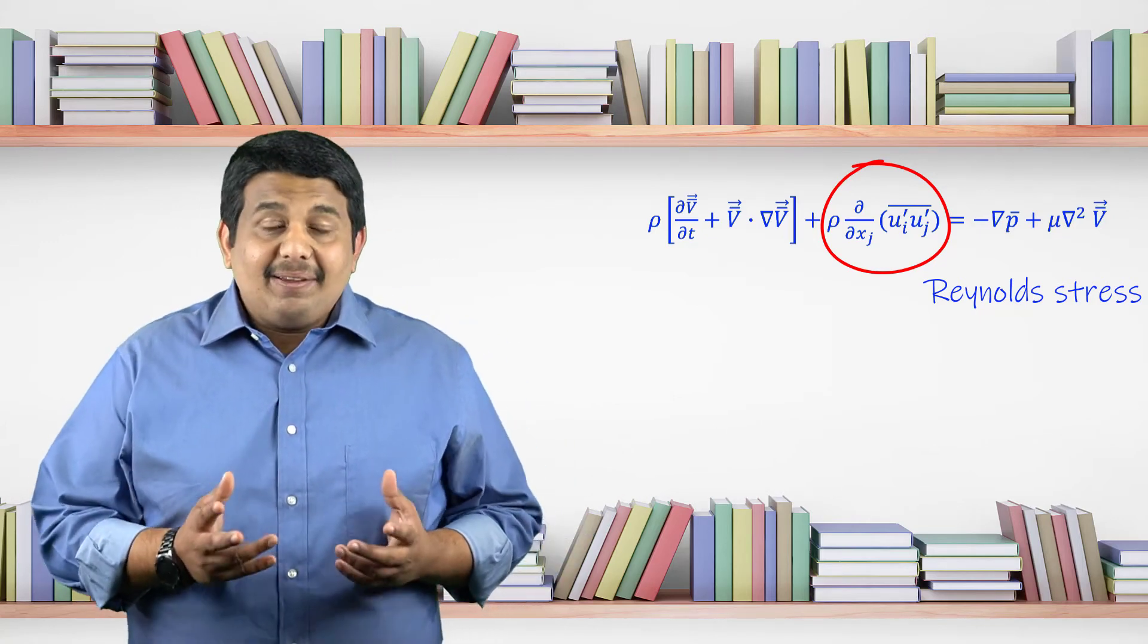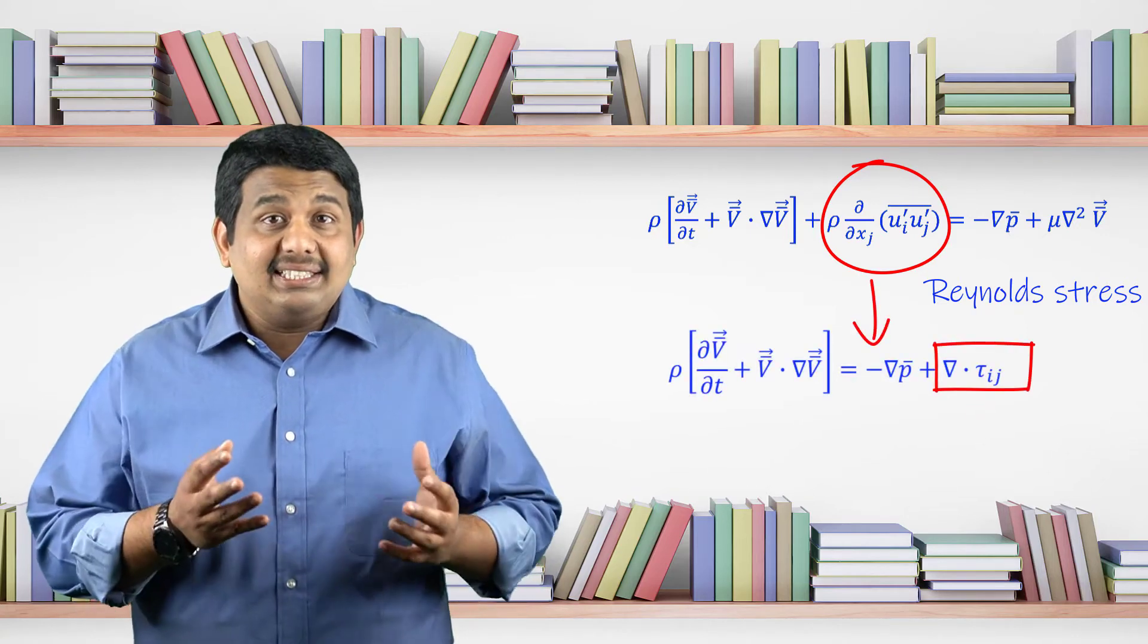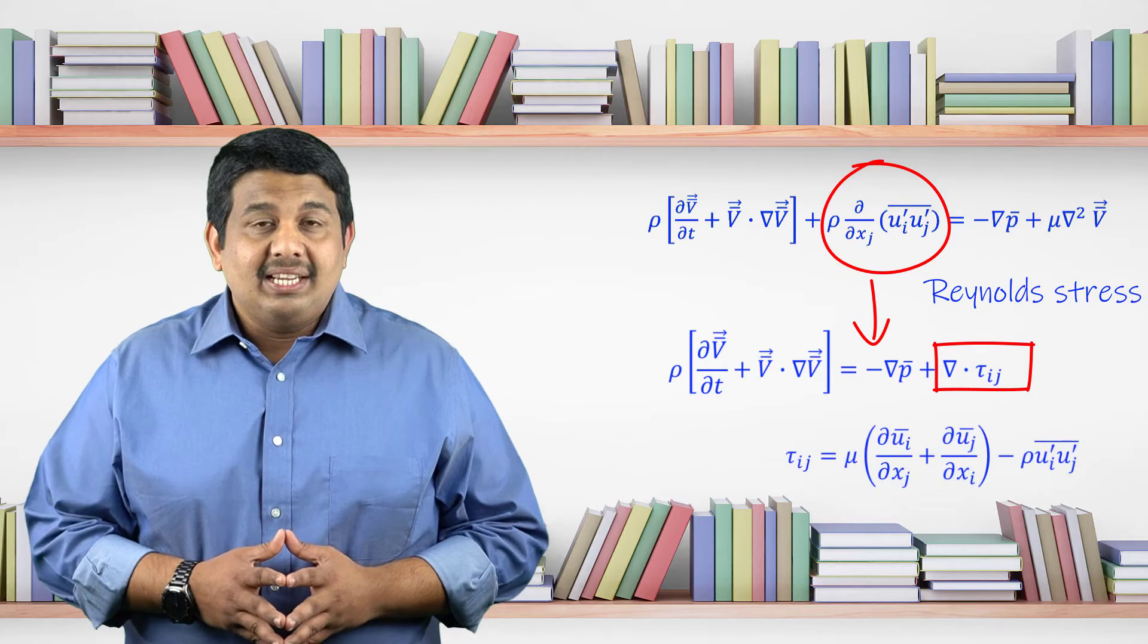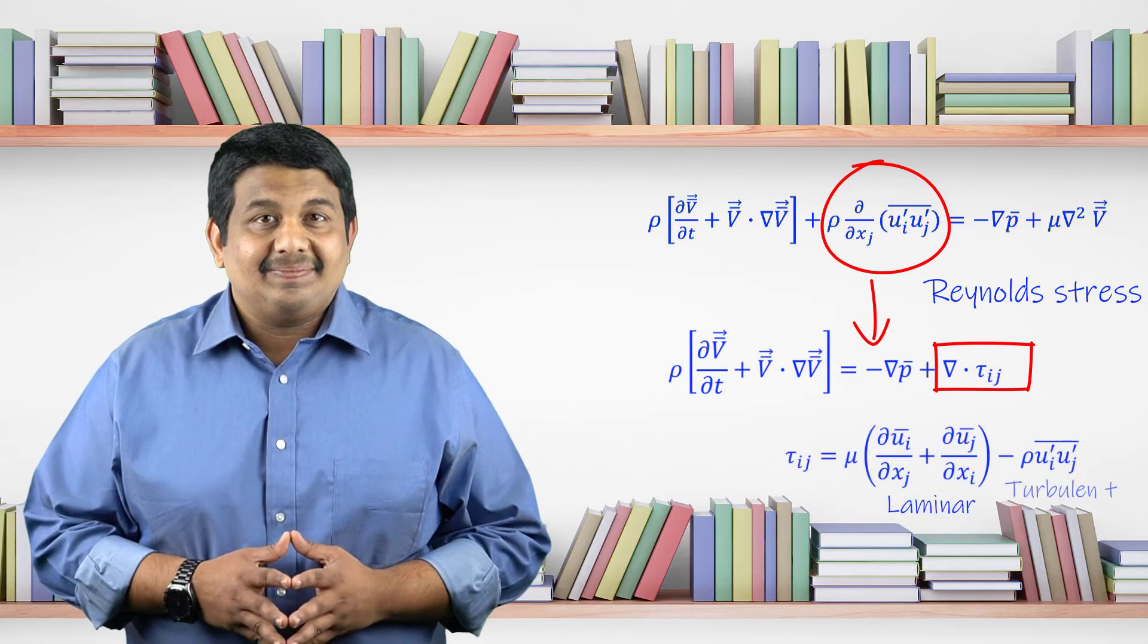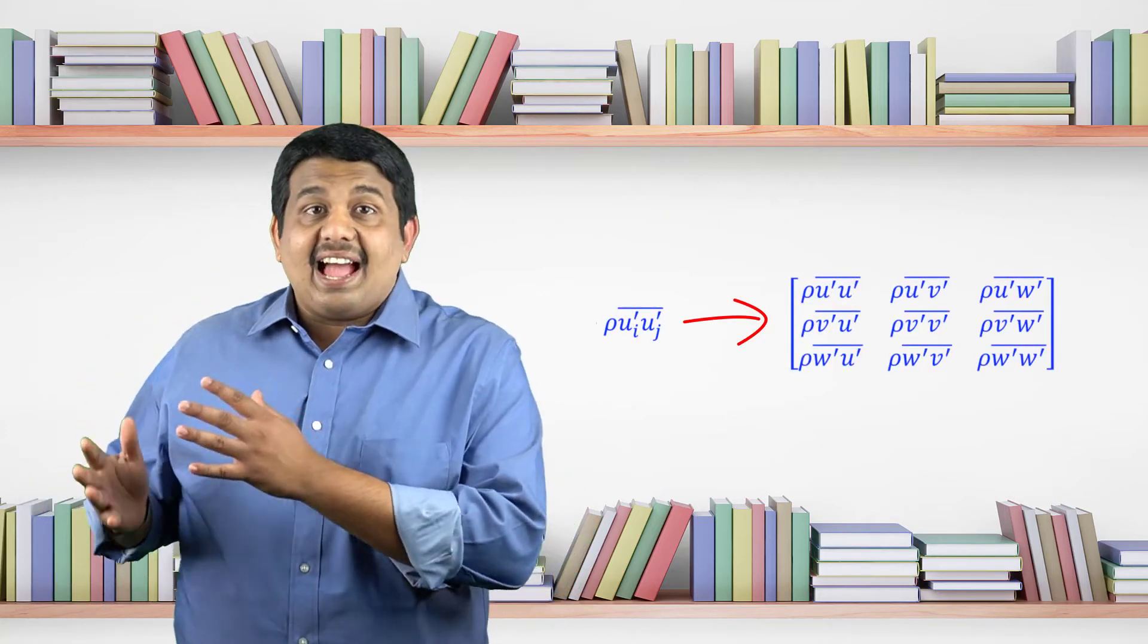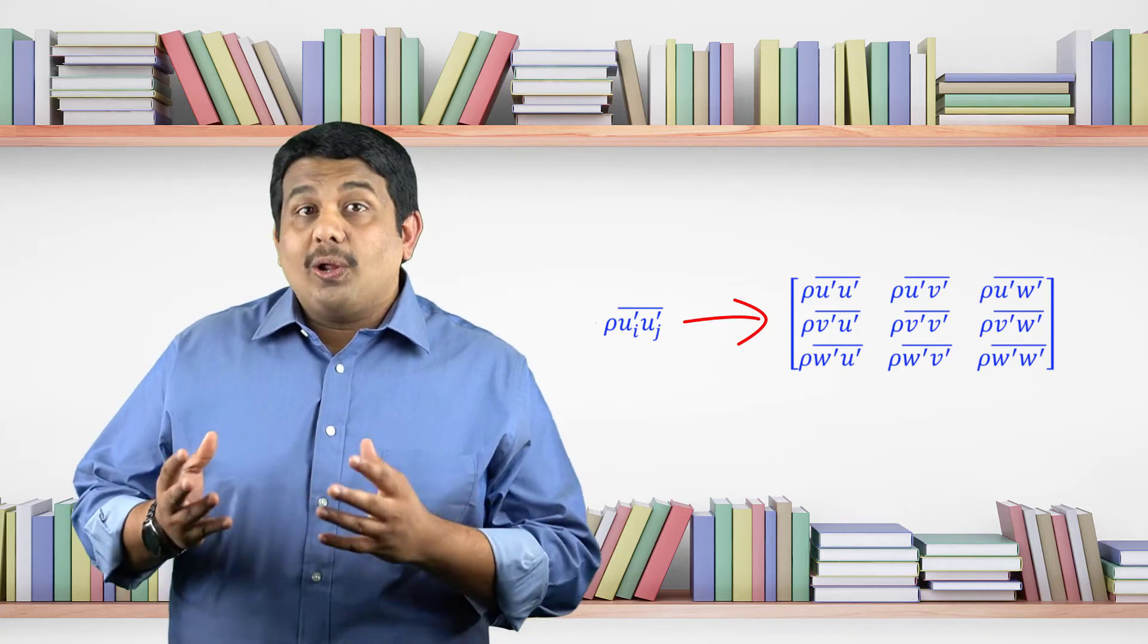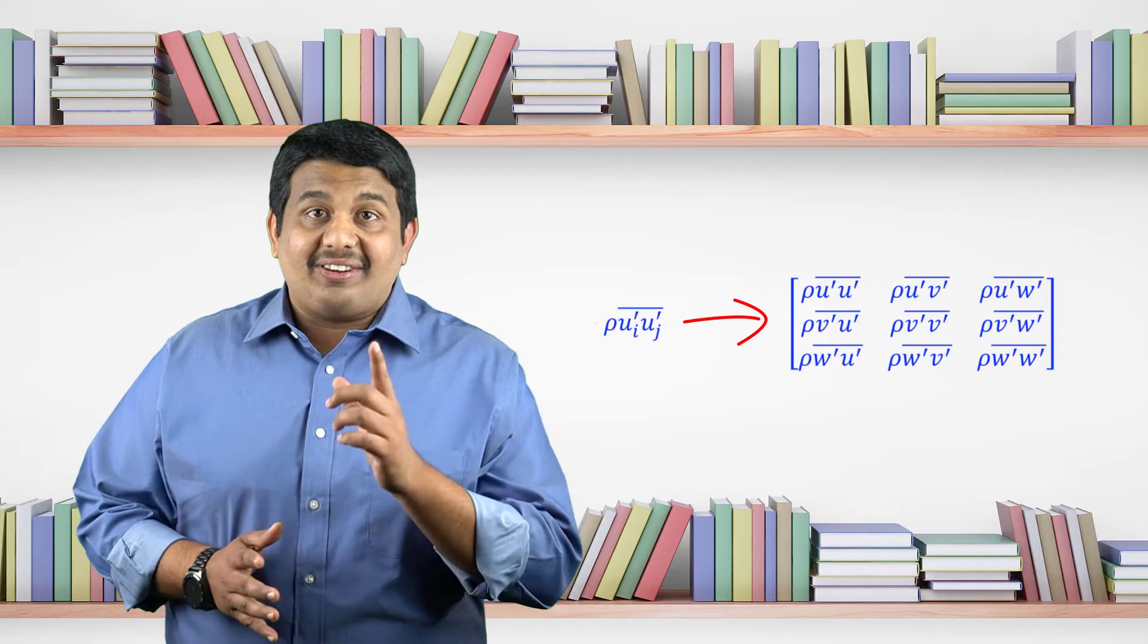This Reynolds stress is a result of time averaging the momentum equation and cannot be neglected in turbulent flows. Let us now rearrange the momentum equation as shown here, where tau is the total stress tensor, which is the sum of the laminar and the turbulent stresses. The Reynolds stress term is a tensor, meaning that we have 9 terms, all of which are unknown and were created as a result of time averaging.